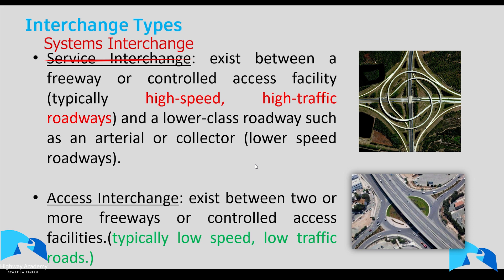An access interchange, just like the name says, allows access. It exists normally between two or more freeways, is normally low speed, and connects to given aspects of a community. Access interchanges mainly provide access and have a lower level of service compared to a service interchange.